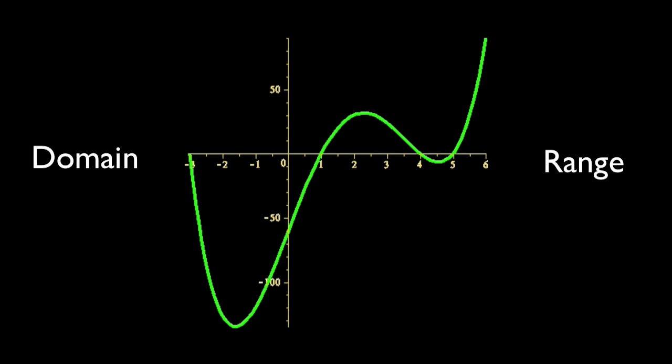Looking at x values, this graph appears to run between negative 4 and 6. The y values require some interpretation. I see 5 tick marks between 0 and 50, so each tick mark must be 10 units. We look left and right for the domain, and we look up and down for the range. The lowest part of this graph is about 3 tick marks below negative 100. Call it negative 130. The highest point is about 4 tick marks, about 50. Call it 90.